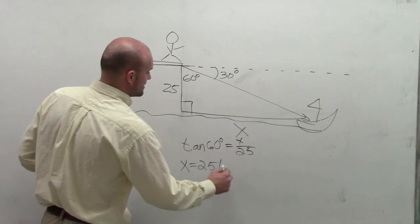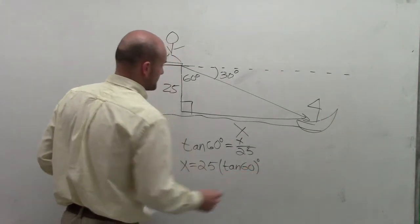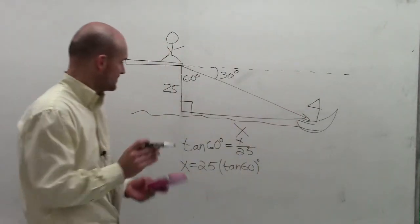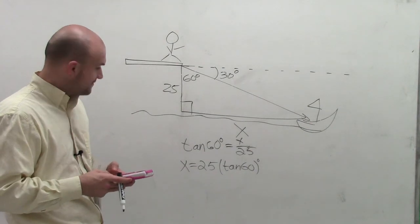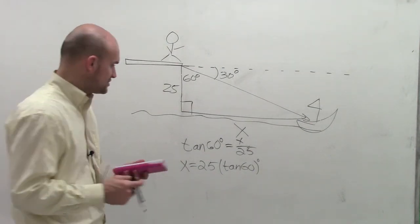Now to solve for x, I multiply 25 on both sides and I obtain x equals 25 times the tangent of 60 degrees. So now I'm going to take my handy calculator and say 25 times the tangent of 60 degrees.